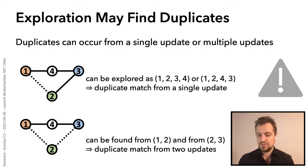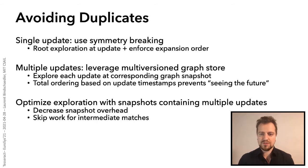So in order to deal with duplicates in Tesseract, we combined several techniques. The first technique addresses the single update case and is an adaptation of symmetry breaking in the context of evolving graphs. This works by rooting the exploration at the update and then enforcing an order for expansion so you cannot possibly find the same graph with multiple explorations. The second technique addresses the case of multiple updates and in this technique we leverage our multi-version graph store to essentially force each exploration to only work within the graph snapshot corresponding to that update. Now this prevents a situation where two explorations from different updates would find the same match. Finally, we also propose an optimization called snapshot-based exploration where we group multiple updates into a single graph snapshot. This allows us to decrease the overhead of maintaining multiple snapshots and also to speed up mining by skipping intermediate matches between two snapshots. More details about that are in the paper.